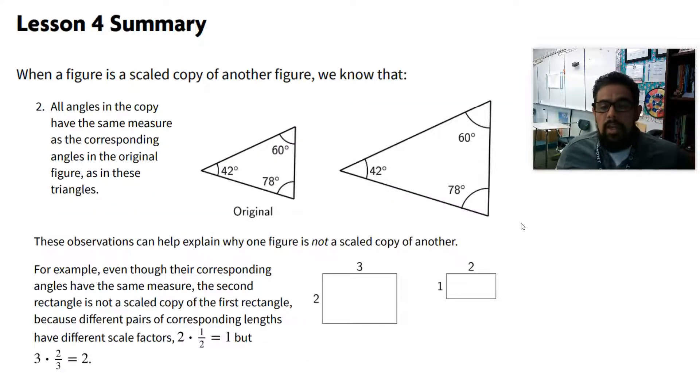When a figure is a scaled copy of another figure, we know that all the angles in the copy have the same measure as the corresponding angles in the original figure, as you see in these triangles. So here we have these two triangles. This is a scale copy of this one. Notice the corresponding angles, 42. Right here, it's 42.